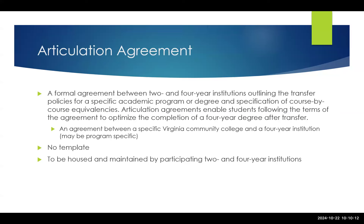Articulation agreements are similar — they tell the student what they need to take to be admitted, the transfer associate degree, and the GPA required. But these are between a specific community college and the four-year institution. These are generally regional or local agreements, not with the VCCS at large, and they may be program specific. There's no template because these are not mandated or required by the state. These would be housed and maintained by the participating two- and four-year institutions, likely on their homepages, and can also be found in the portal if submitted for posting.